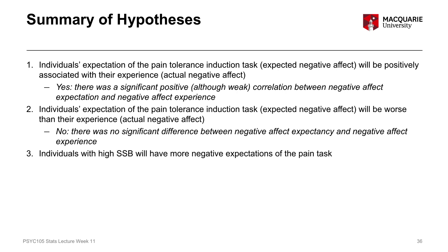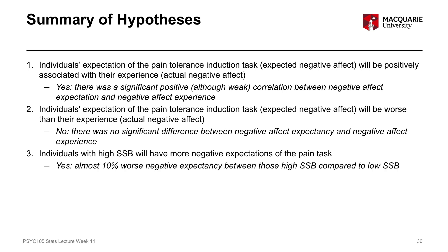Our third hypothesis said that individuals with a high somatic symptom burden will have more negative expectations of pain compared to those with low somatic symptom burden, and that's exactly what we found. There was an almost 10% worse negative expectancy between those with high somatic symptom burden compared to low somatic symptom burden.